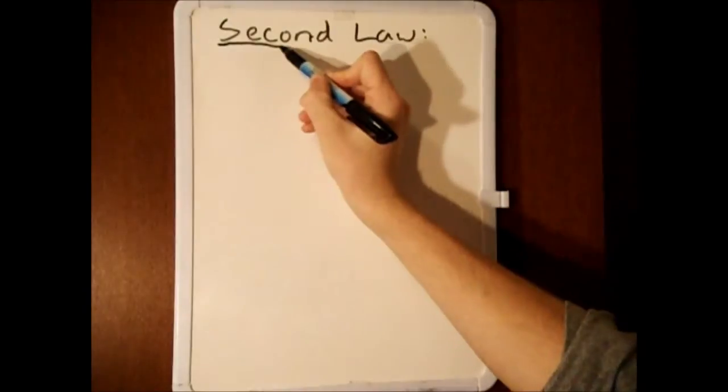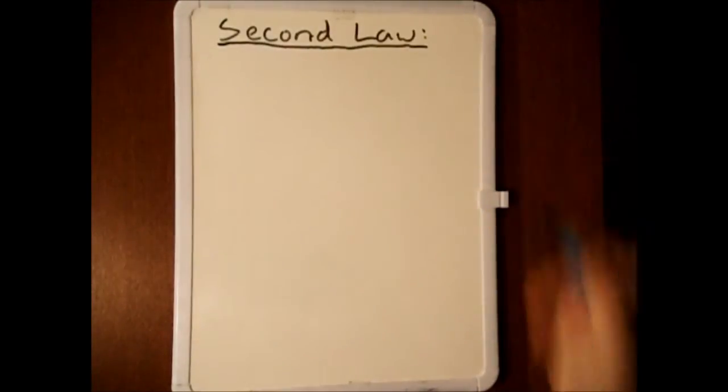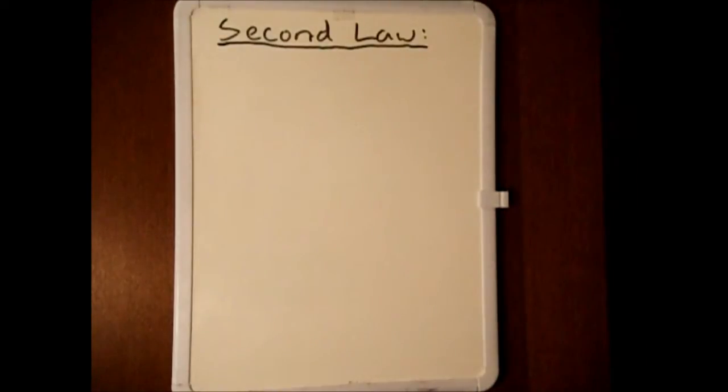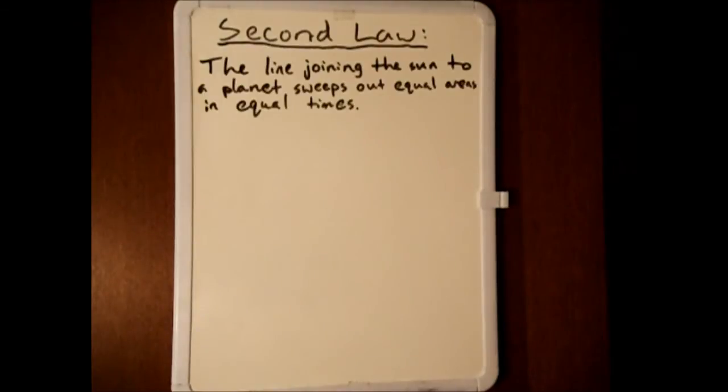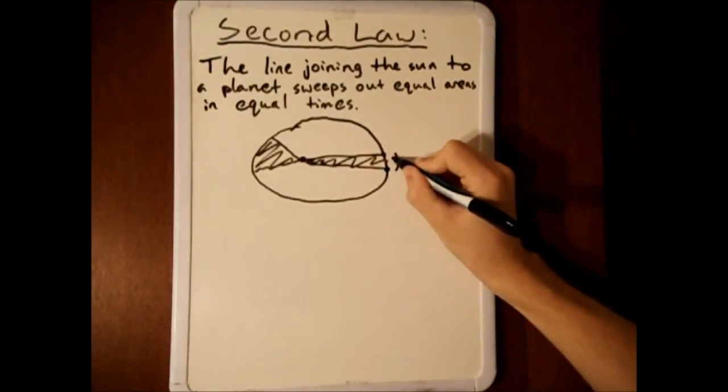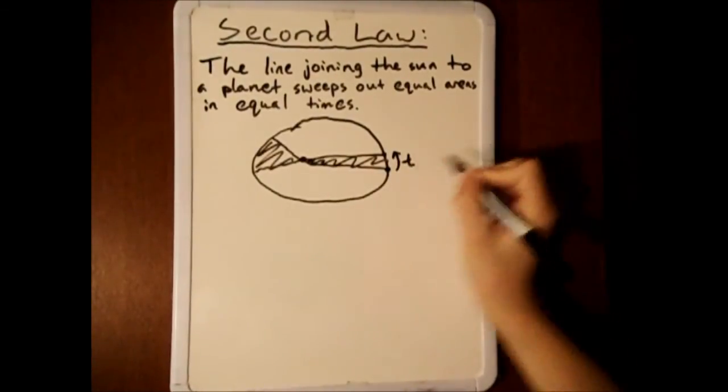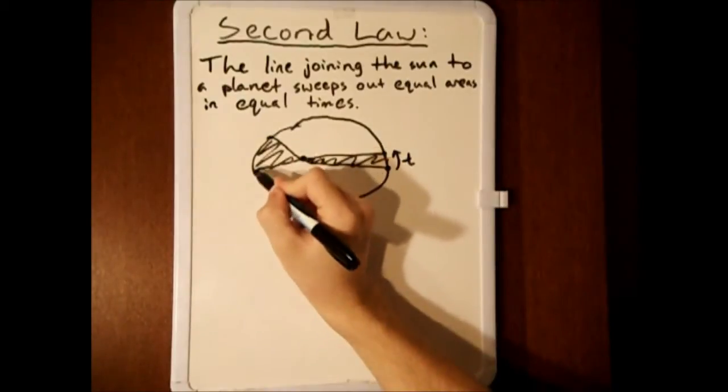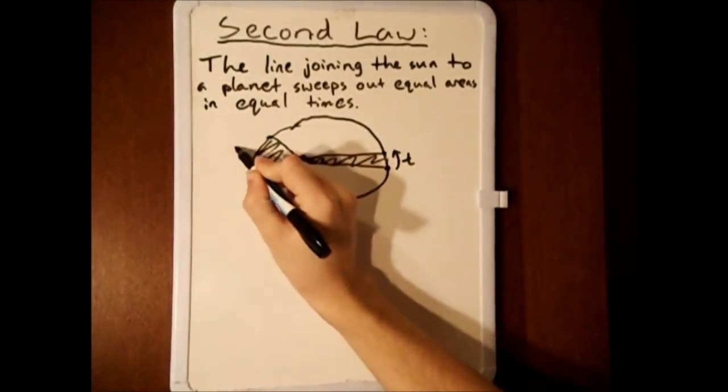Kepler's second law states that the line joining a planet and a sun sweeps out equal areas in equal times. Here is a graphical representation of this law. As long as these two orbital periods are equal, the areas here and here will be the same.